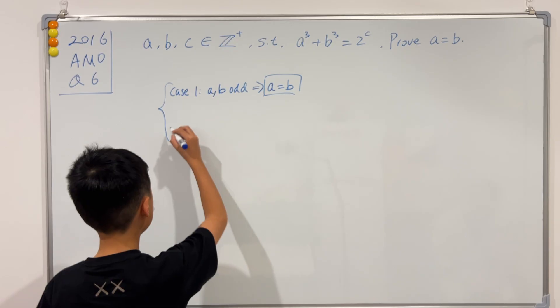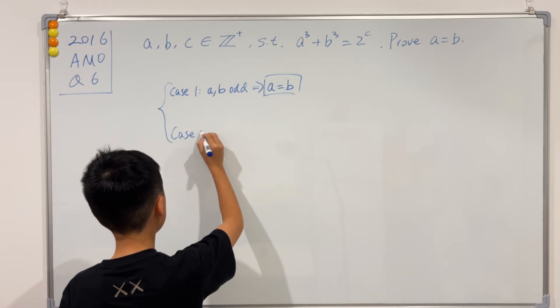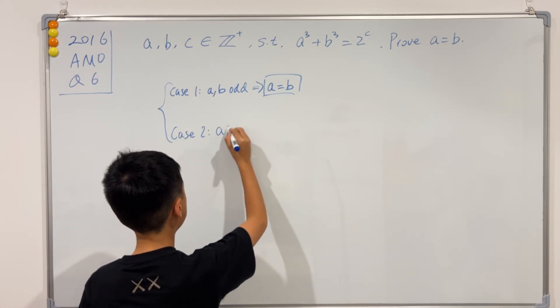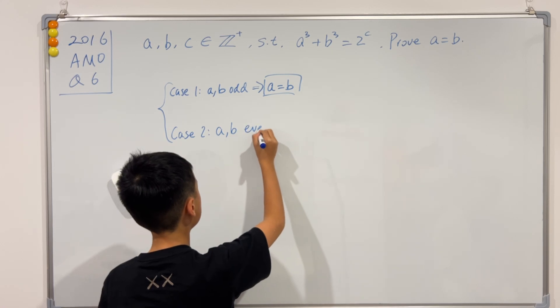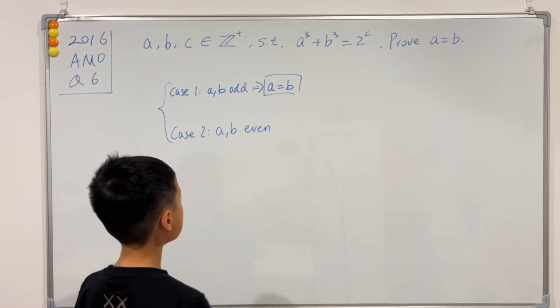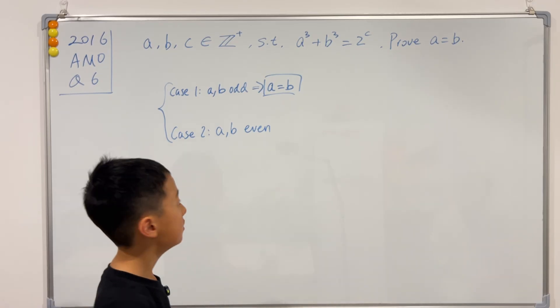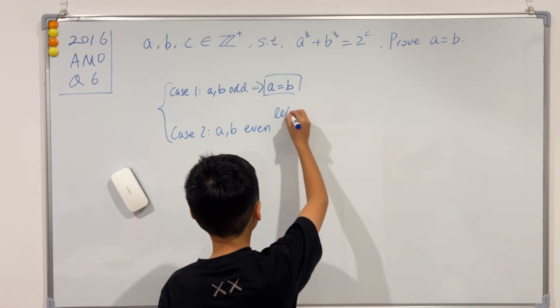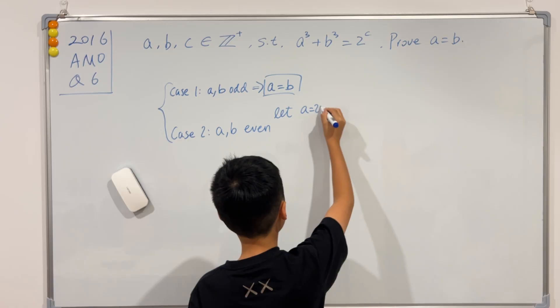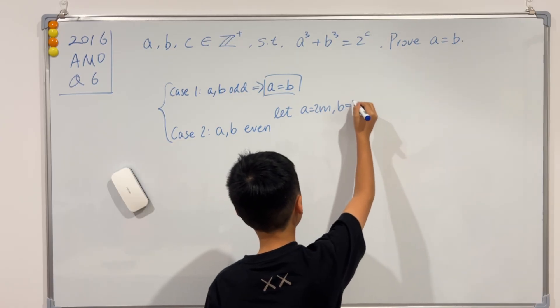Okay. And now, for case 2 where a and b are both even. We can let a to be 2m and b to be 2n.